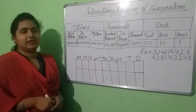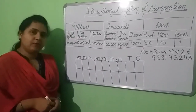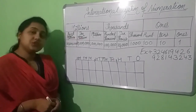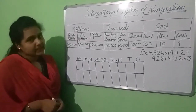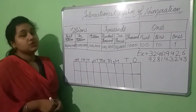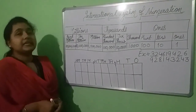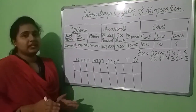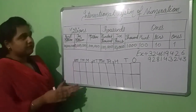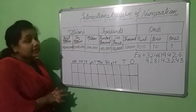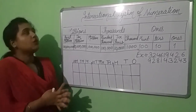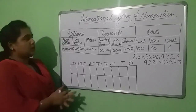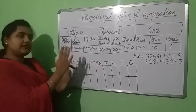Hello everyone, my name is Madhukumari and today I am going to teach you maths. As you all know, this is our second class and we are going to continue chapter 1. In the previous class, we discussed about the national place value chart. And today we are going to discuss about the international system of numeration, or you can say the international place value chart. You can see I have drawn the chart here, so let's discuss this.